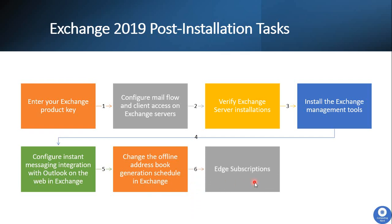Finally, you can configure the Edge Subscription. To establish internet mail flow through an Edge Transport Server, subscribe that Edge Transport Server to an Active Directory site — this will automatically create two Send Connectors required for internet email flow. If you choose not to subscribe the Edge Transport Server to an Active Directory site, you will need to manually create the Send Connector to establish mail flow between your Mailbox Server and the Edge Transport Server.